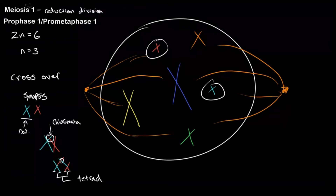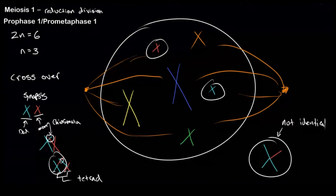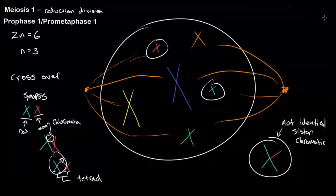How does crossing over increase genetic variability? Say the blue chromosome is from the father and the red one is from the mother. While they're coding for the same information — like eye color or hair color — they may have different alleles. During crossing over, they actually exchange alleles. So while they may still be homologous chromosomes, the sister chromatids of each chromosome are no longer identical because of crossing over.